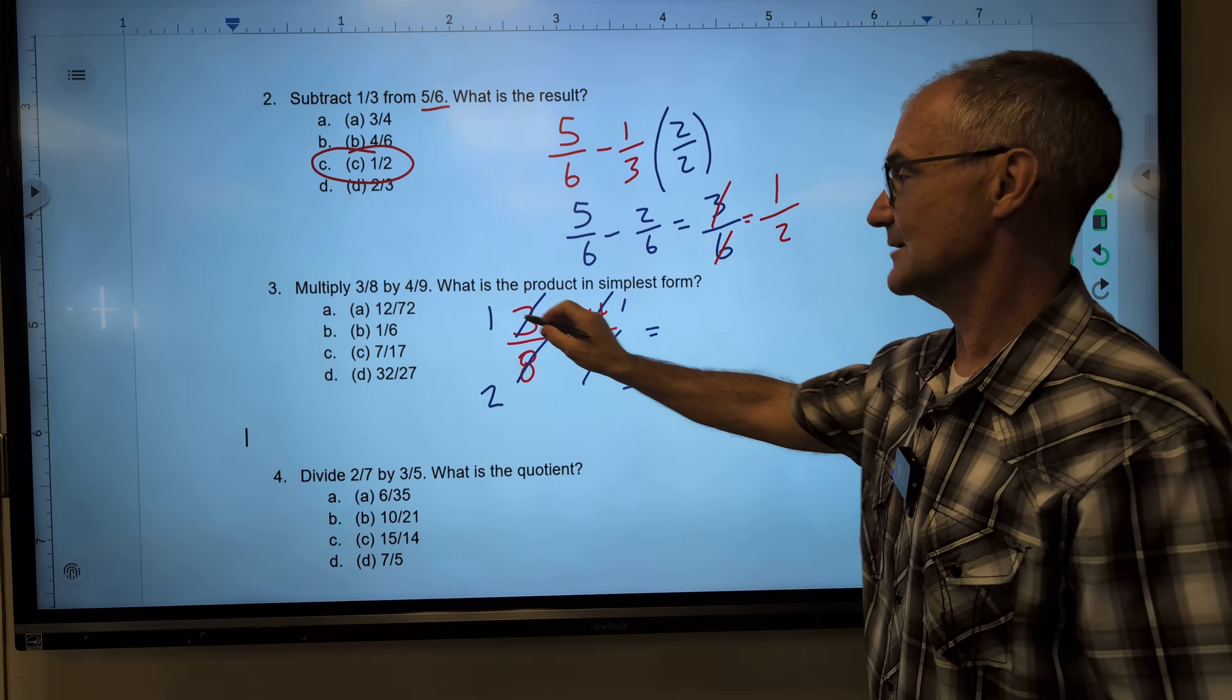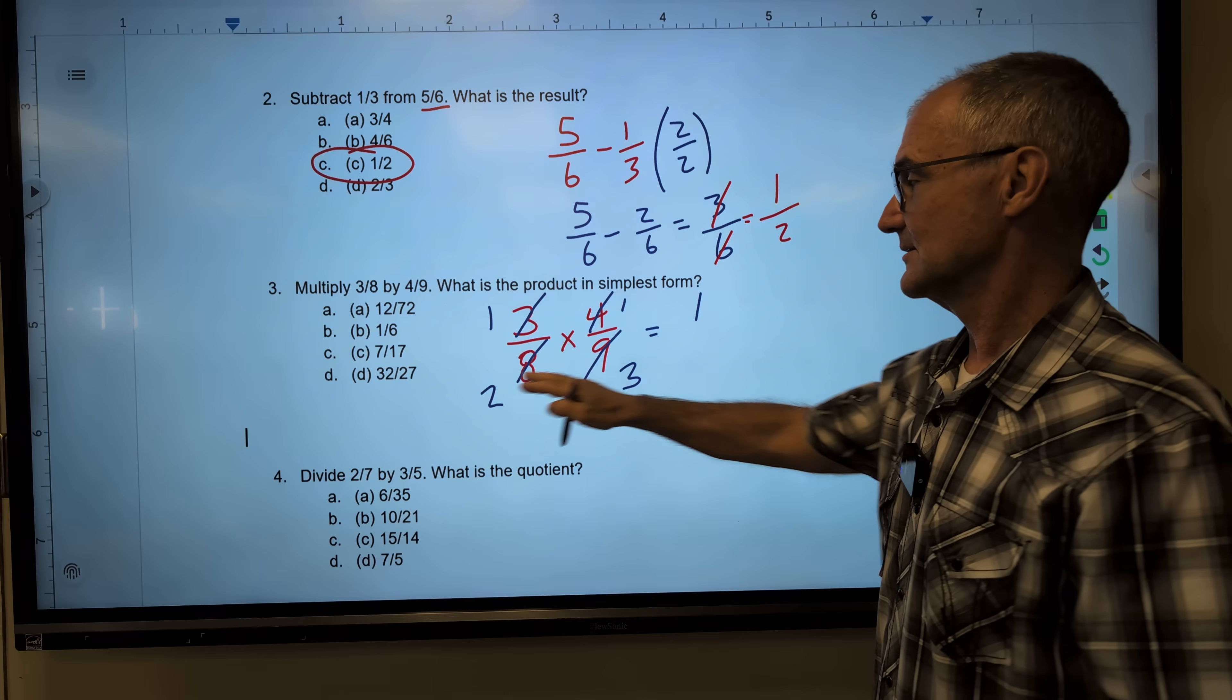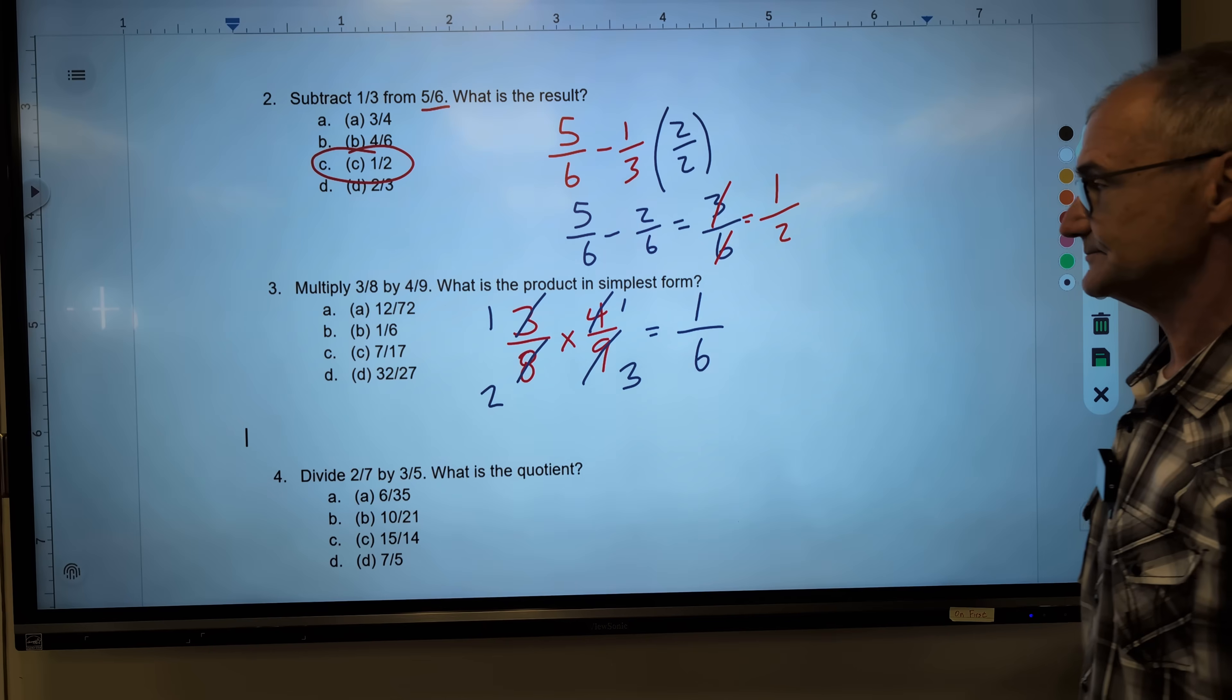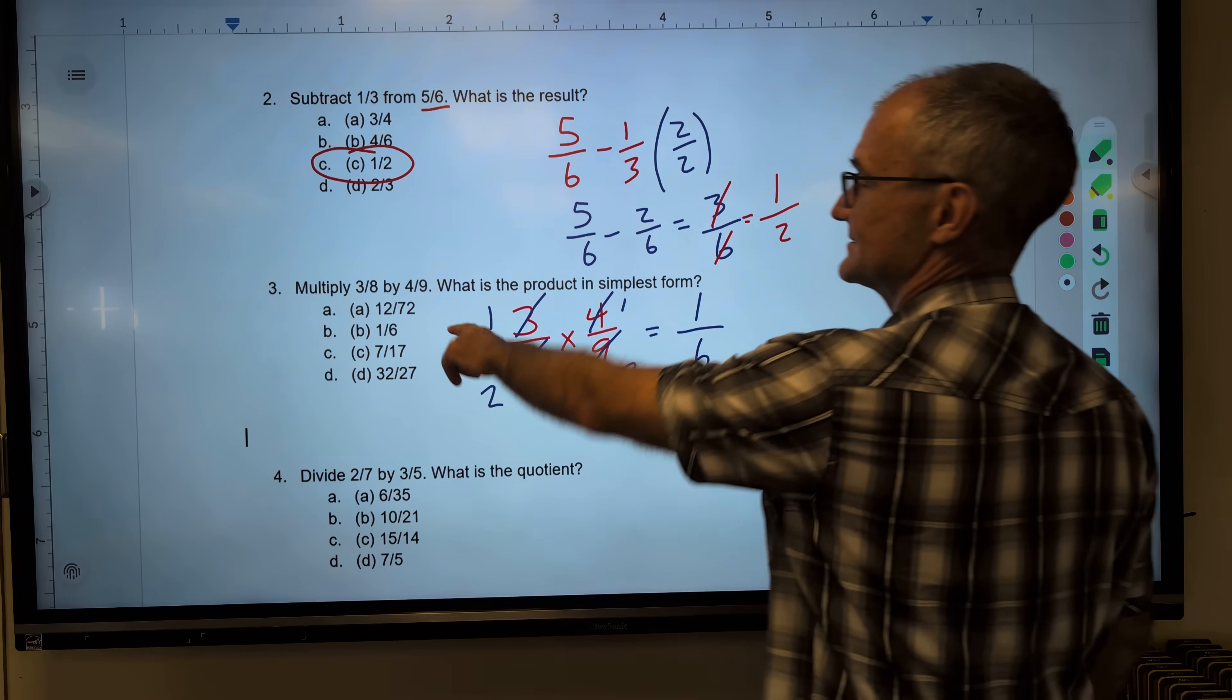I multiply across the top, one times one. Multiply across the bottom, six. That's it. Correct answer is answer B.